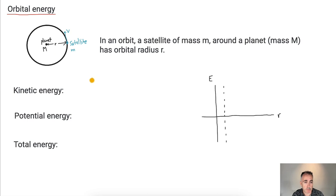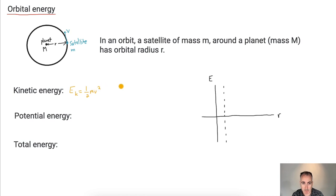What happens with the kinetic energy? Hopefully you remember that equation: EK equals half mv squared. Now it turns out as orbital radius R gets larger, the speed gets smaller — we're going to see that later with a derivation. So as R gets bigger, speed gets smaller. Because of that, if we graph it, the kinetic energy EK goes something like a decreasing curve.